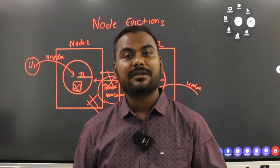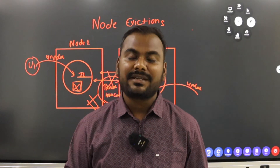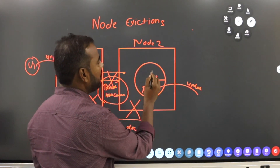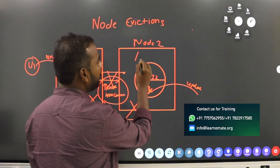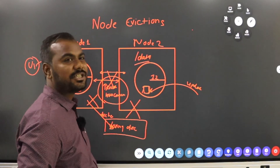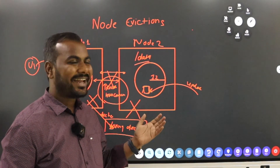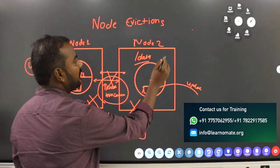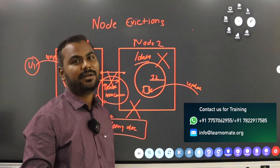Eviction can be manual or automatic. There are certain situations — for example, on your node 2, if you don't have sufficient space available on a mount point like slash data, and there is not enough space for your grid software — maybe someone has dumped a lot of unimportant data there — what will happen? The node will be evicted and will not be part of your clusterware.